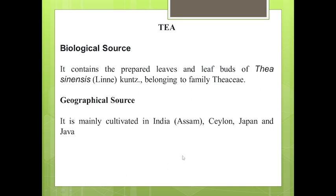The botanical name is Thea sinensis and the family is Theaceae. Geographical source: tea is mainly cultivated in India in Assam, Ceylon, Japan, and Java. Tea is of two types: black tea and green tea. Black tea is available from India and Sri Lanka, whereas green tea is available from Japan and China.